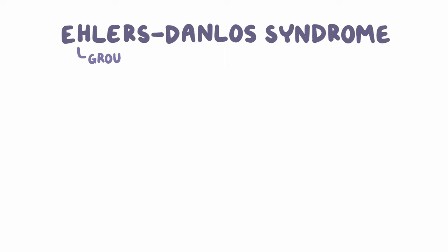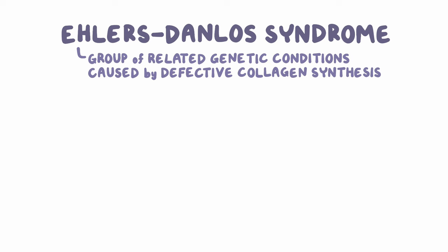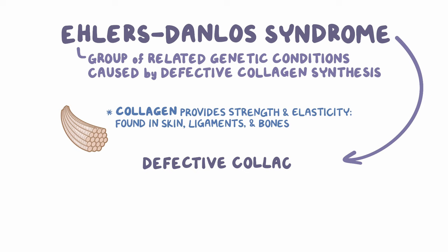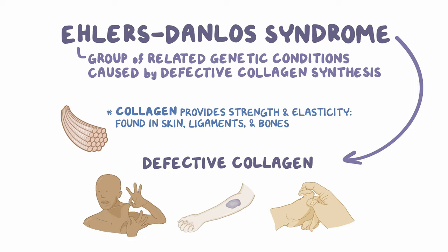Ehlers-Danlos Syndrome is a group of related genetic conditions that are all caused by defective collagen synthesis. Normally, collagen provides strength and elasticity to our bodies, and it's found in the skin, ligaments, tendons, and bones. In Ehlers-Danlos Syndrome, defective collagen leads to stretchy skin, easy bruising, and joints that are super flexible.